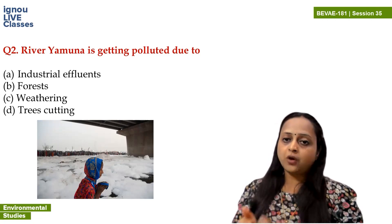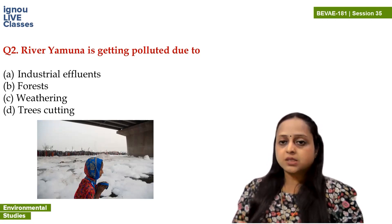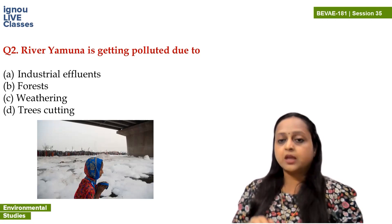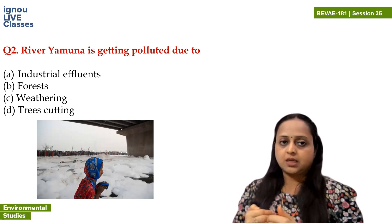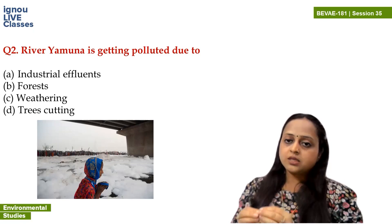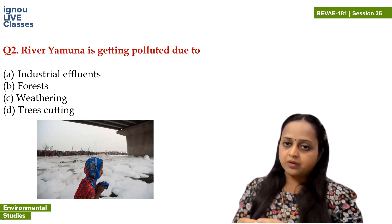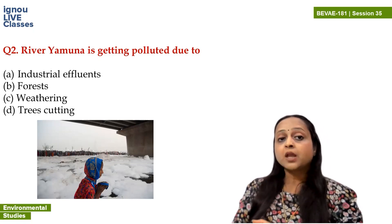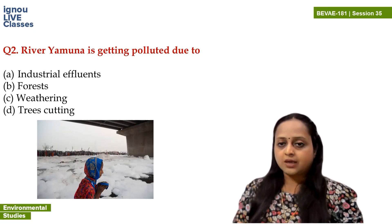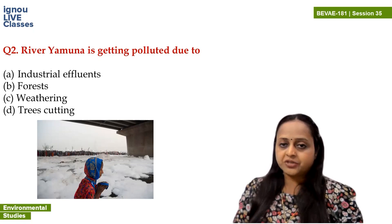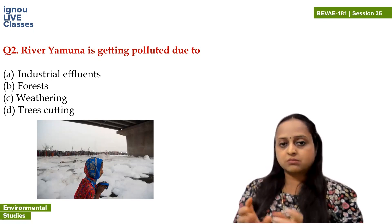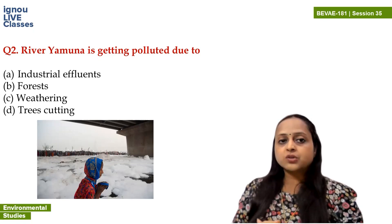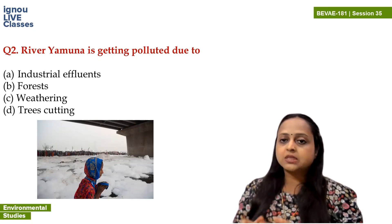If we talk about forest — having forest does not cause pollution; in fact, forests reduce pollution, not increase it. So forest is also not the answer. The answer remaining is industrial effluent. If we are discharging untreated industrial wastewater into the river, then we will definitely face the condition you are seeing on screen. Industrial effluent contains sulfates, phosphates, or even detergent, so froth on water is very normal in that case. So industrial effluent is the reason river Yamuna is getting polluted, and the answer is option A.